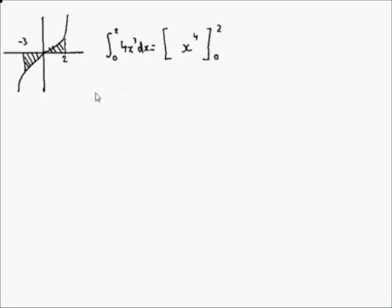You substitute in 2 and you have 2 to the power of 4 minus 0 to the power of 4. 2 to the power of 4 is 16, so you just have 16 minus 0, which equals 16. So that area there is 16.